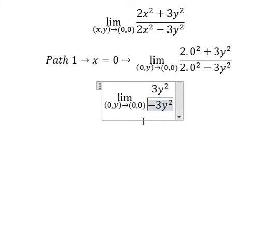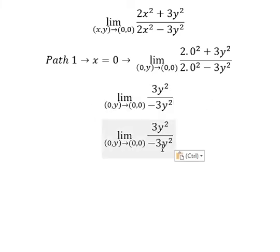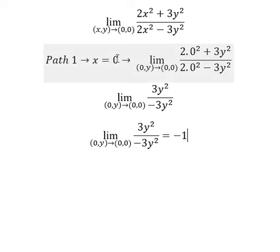And we have like this. Next, this one divided by this one, we will have negative one. Now let's go to path number two.